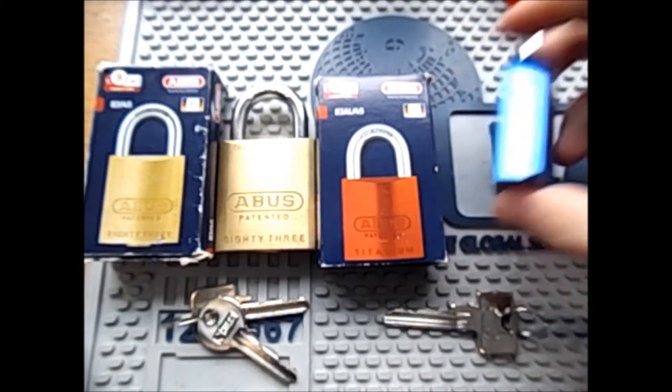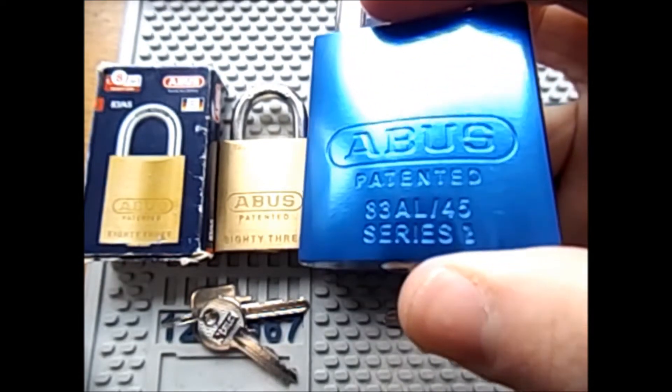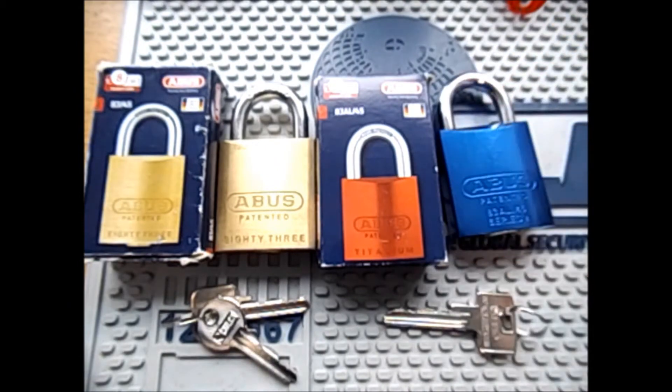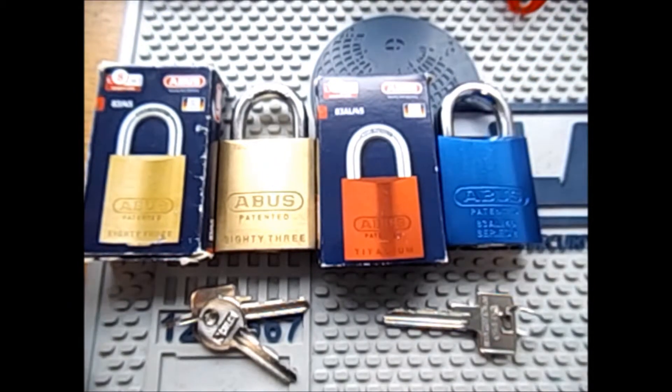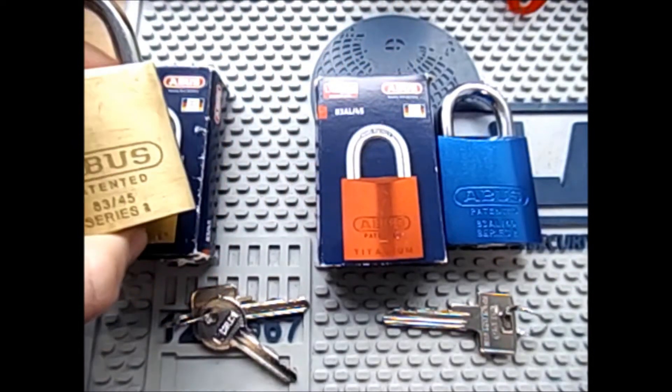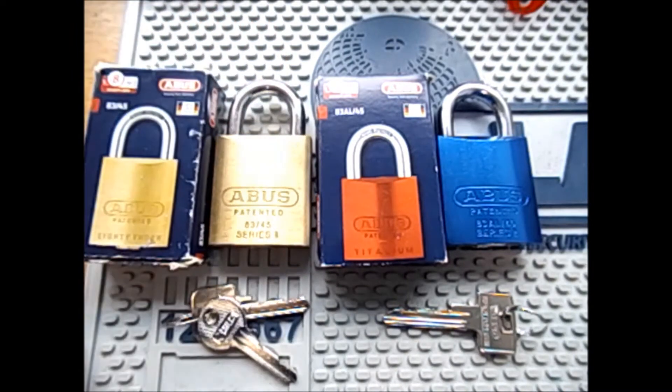So this is the ABUS 83AL45 Series 2 and today we're going to have a look at some of its features. What makes it different from the ABUS 8345. We won't go into all the features of this lock like the Z bar because I've already done that and I don't want to bore you guys to death. I want to first of all thank Tony S for sending this lock to me. These locks are very hard to come by. You have to get them from either America or Australia and I think Tony got this one from America.